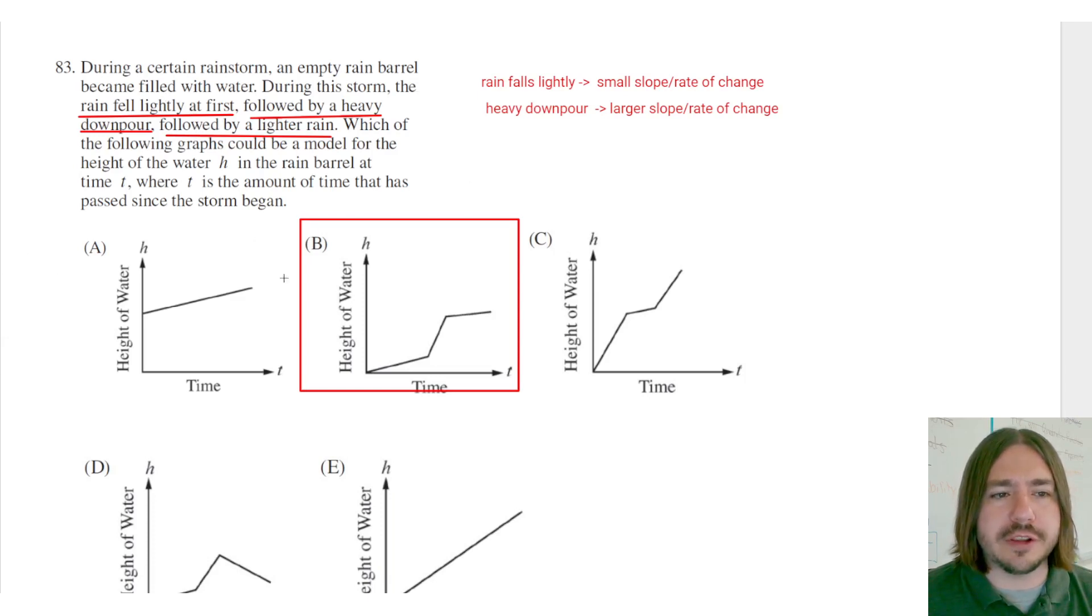So there's really like three sections here, right? There's the first section where the rain falls lightly. There's the second section here where we're followed by a heavy downpour. And then the third section is when the rain kind of lets up again.